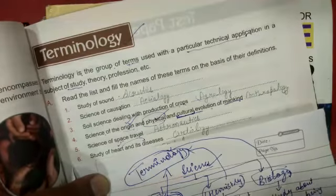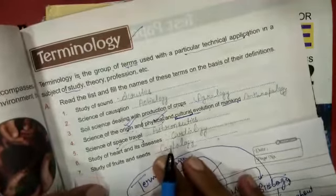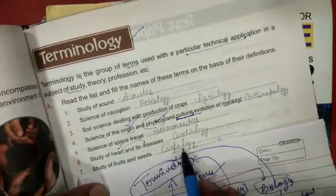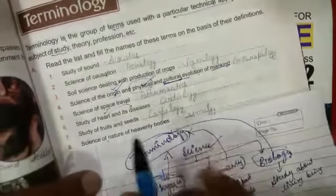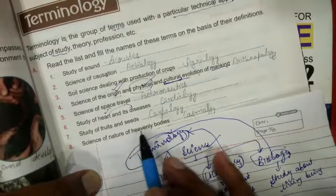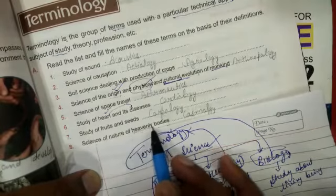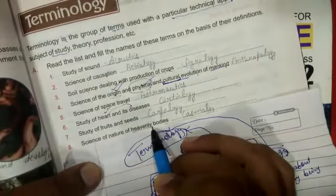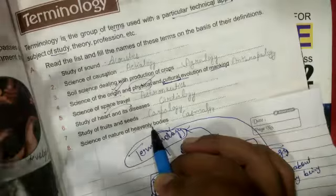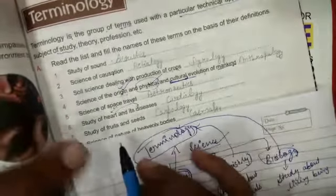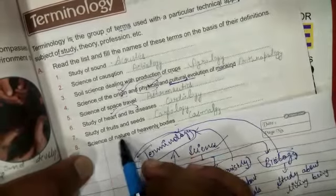Let me tell you the heart muscles are also cardiac muscles. So let us proceed. The next, study about fruits and seeds, that is called carpology. Similarly, science of nature of heavenly bodies. Heavenly bodies means big bodies in the universe like the planets, sun or whatever such big bodies.